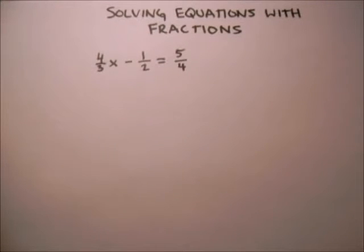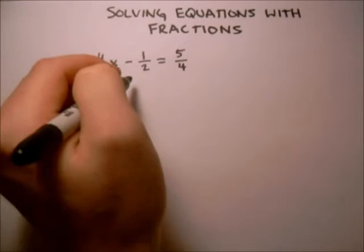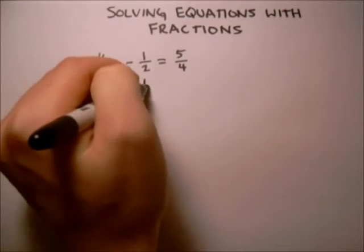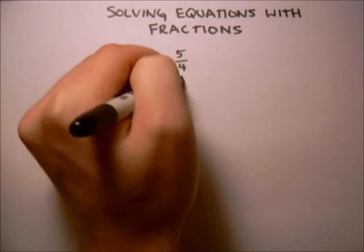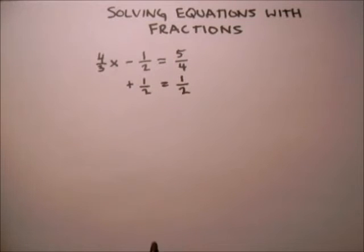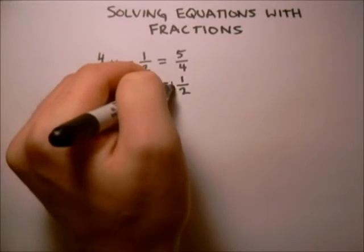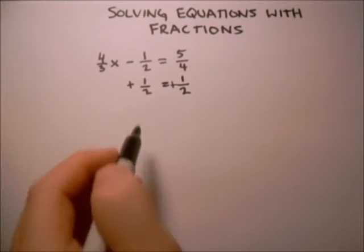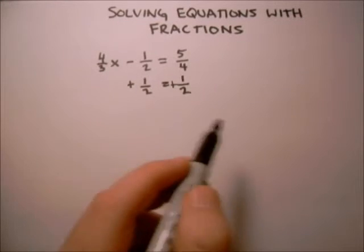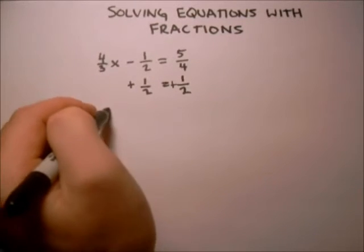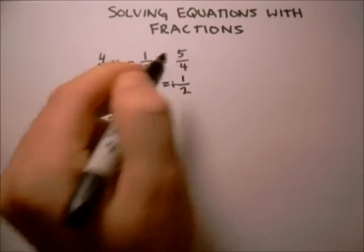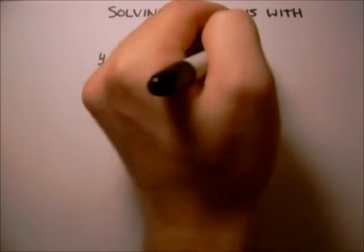The first thing that we want to do is add this 1 half to both sides. That way everything without an x will be on the right hand side. So that gives us 4 thirds x equals 5 fourths plus 1 half.